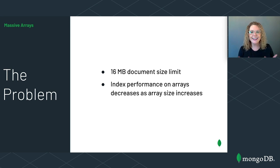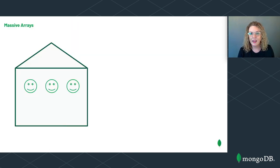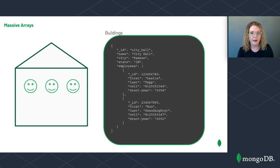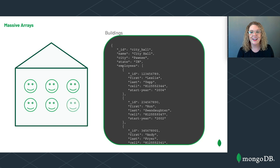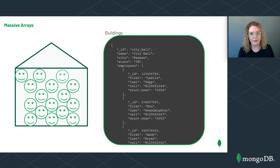Let's take a look at an example from Parks and Recreation. Let's say we want to store information about government employees and the buildings where they work. Let's begin by considering embedding information about the employees inside of the building documents. Here we can see a document for City Hall with an array named employees that contains a sub-document for Leslie and a sub-document for Ron. The employees array is unbounded — as we begin storing all employees who work in City Hall, the array will become massive, potentially sending us over the 16 megabyte document maximum. Additionally, if we create an index on the employees array, the performance of that index will decrease as we add more employees. So this is an example of the massive arrays anti-pattern.